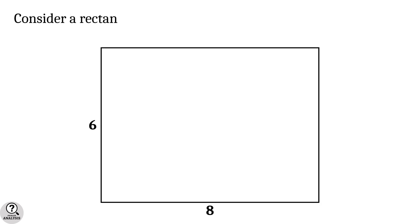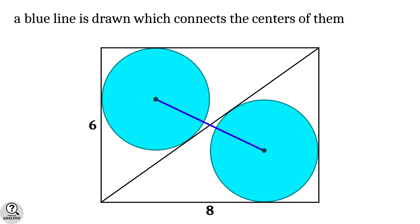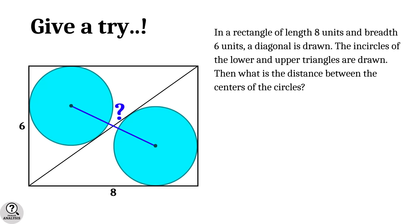Consider a rectangle with length 8 units and breadth 6 units. Draw one of its diagonals, then draw the incircles on the upper and lower triangles. A blue line connects the centers of these circles. The problem is: what is the length of this blue line, or in other words, what is the distance between the centers of these circles? If you want to attempt the problem, pause the video and give it a try.